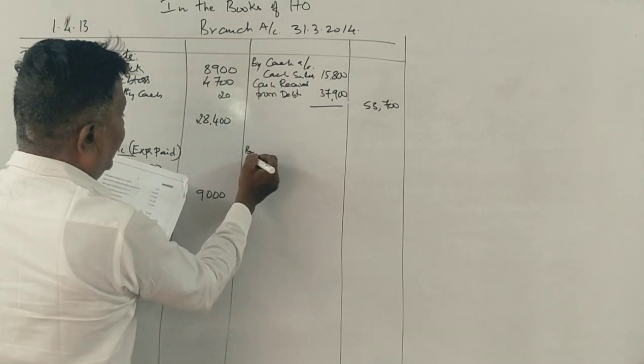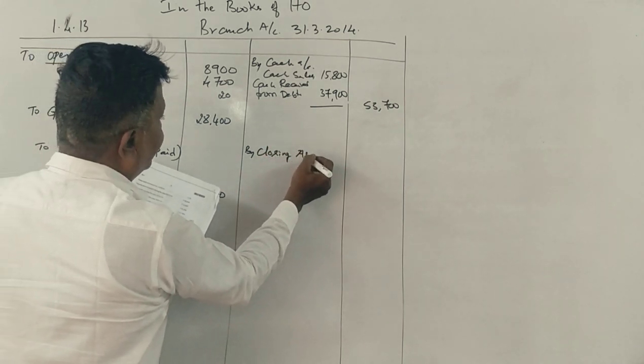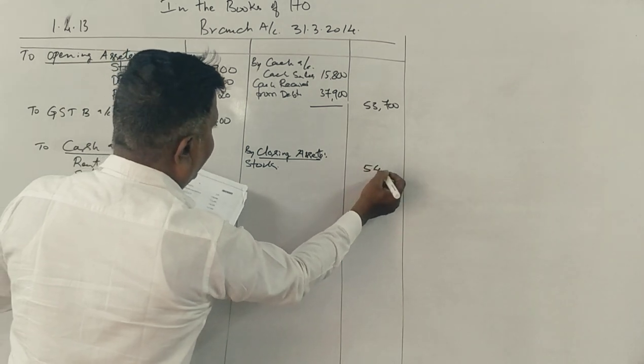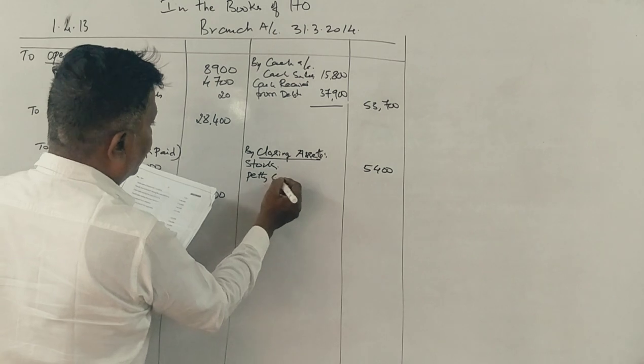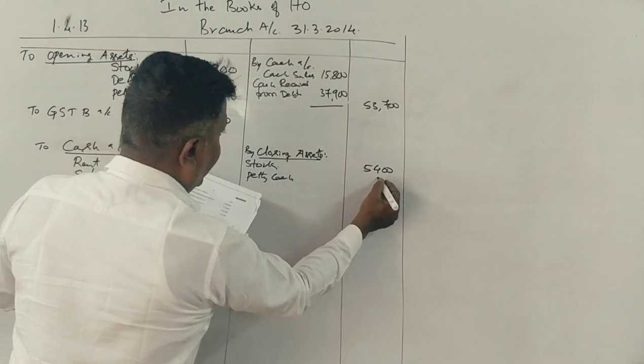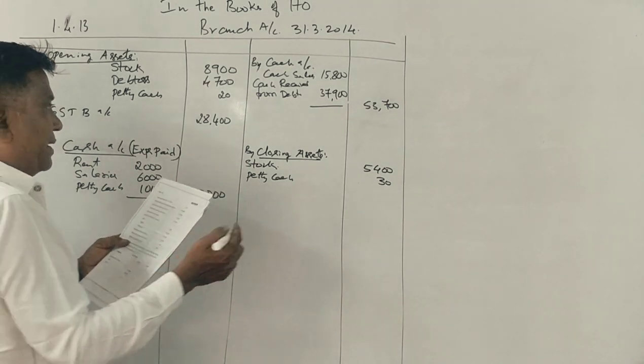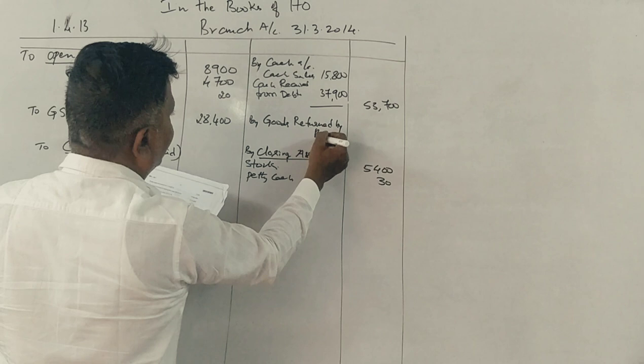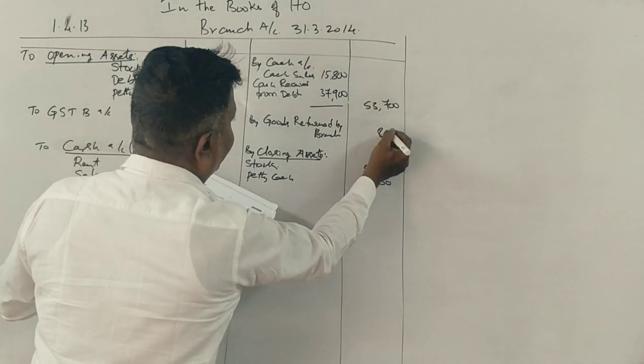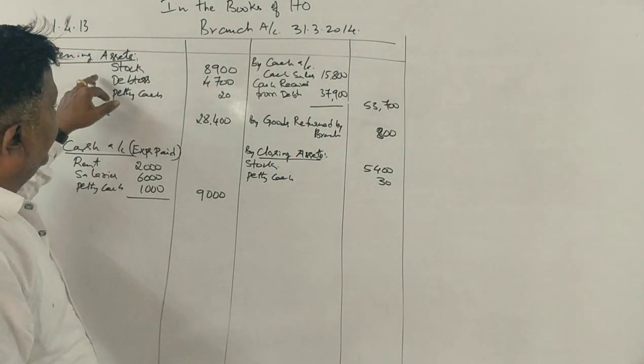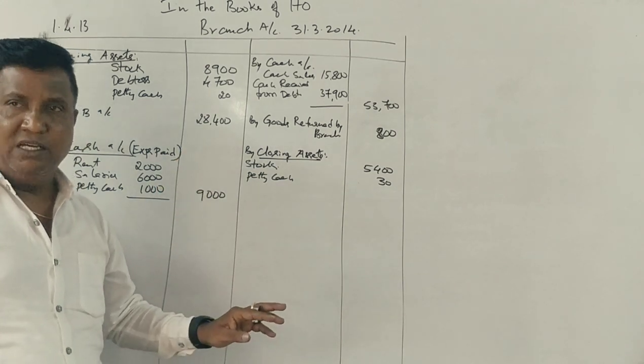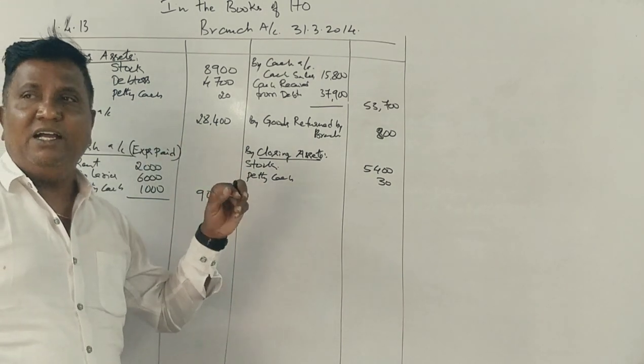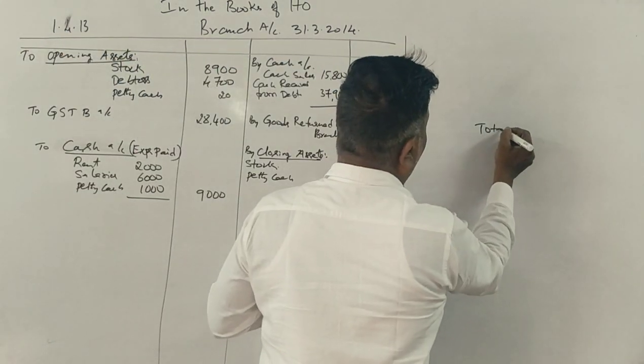Closing balance of assets. Closing balance of assets includes stock, 5,400, petty cash, 30 rupees, and goods returned by branch, 800 rupees. Correct.